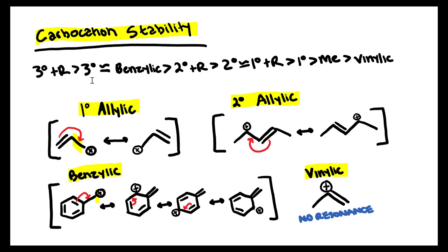There's some discrepancy regarding tertiary and benzylic carbocations, with some resources saying that tertiary is more stable than benzylic and others saying the opposite. The truth is that benzylic carbocation stability varies because here we're looking at an example of primary benzylic.